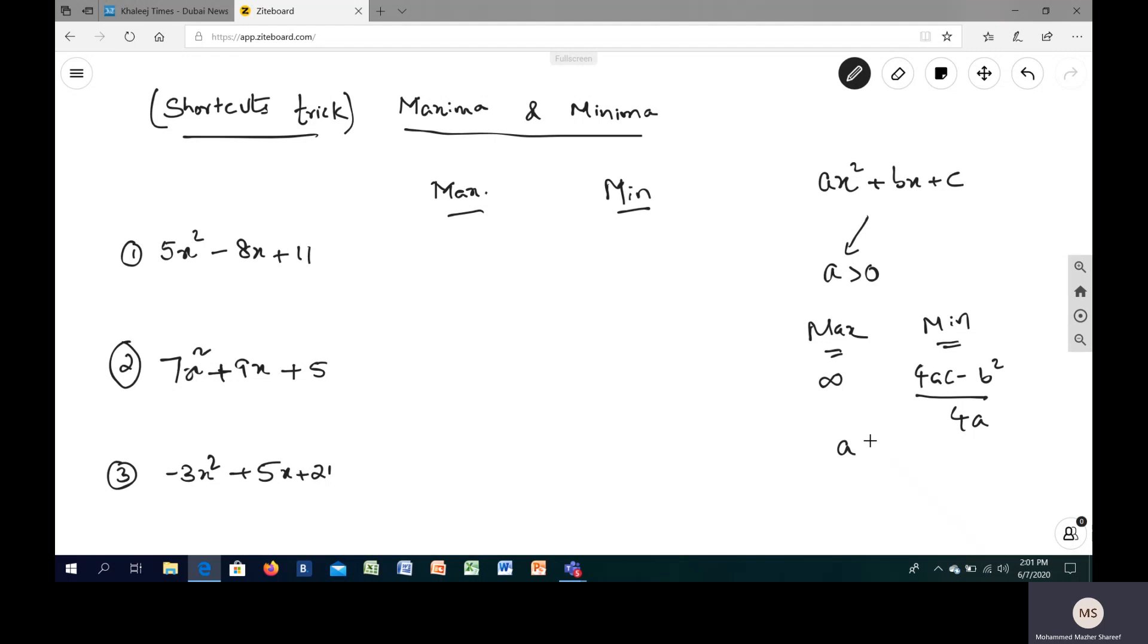What happens if my a is less than 0? Just like in the case I have given one example, negative 3, the coefficient of x squared is less than 0. So in that case, your minimum, since it is less than 0, will reach negative infinity. But what about the maximum then? The maximum is this one, 4ac minus b squared by 4a.